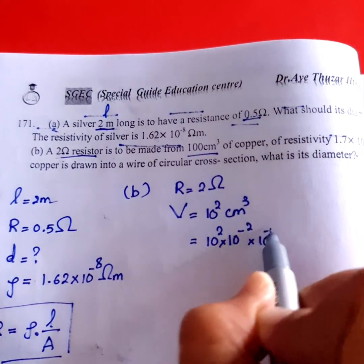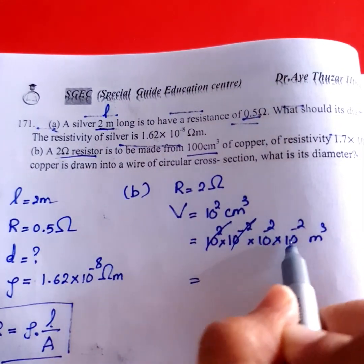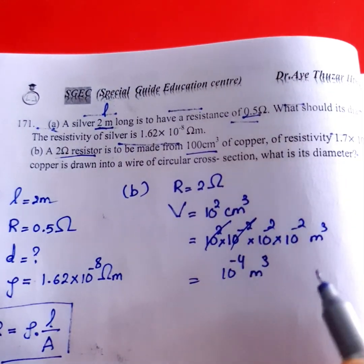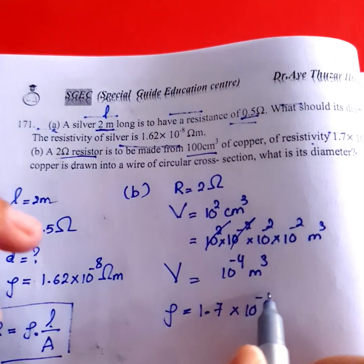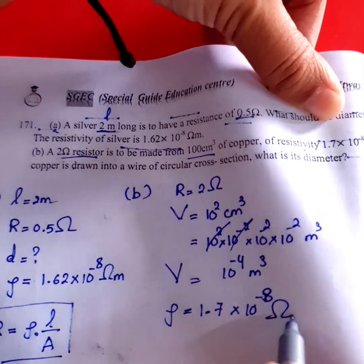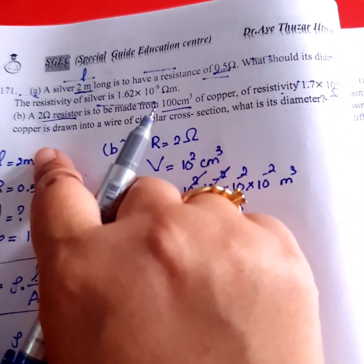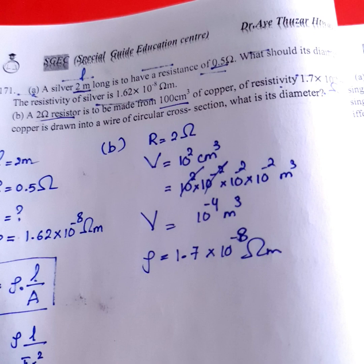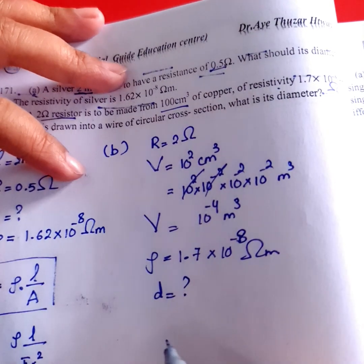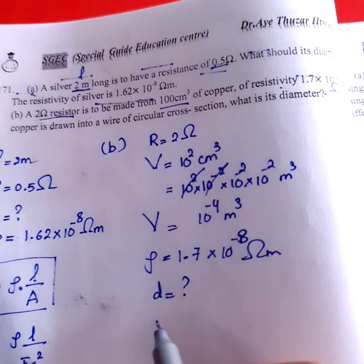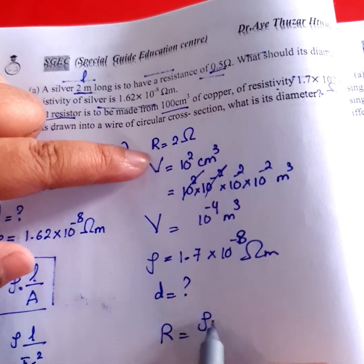Now, the resistivity — the resistivity is like one by seven, but it is minus in ohm-meter. If the resistivity is drawn into the length over the cross-section, if the resistivity is drawn into one over the cross-section, then the resistivity formula applies.